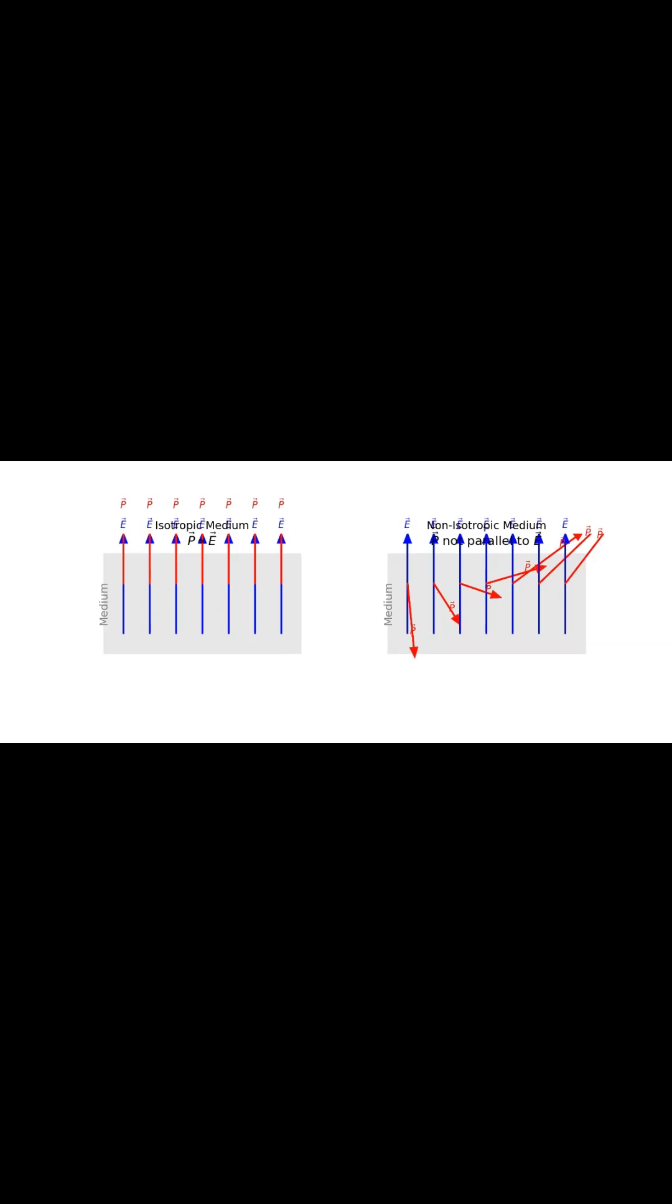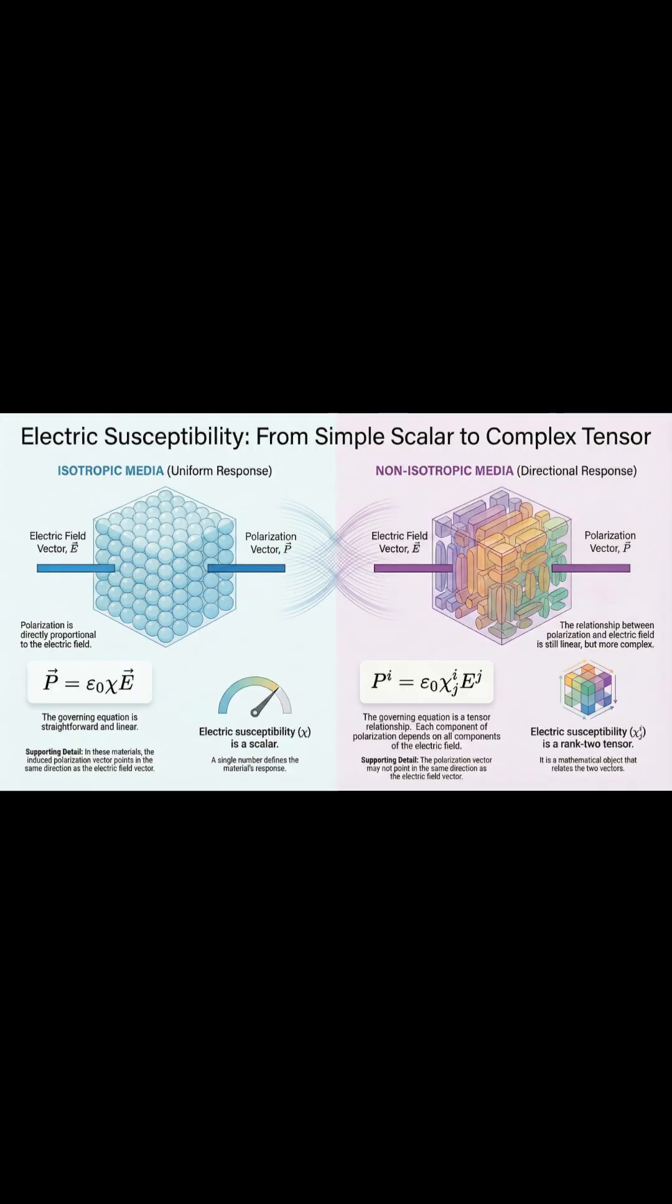Finally, for those non-isotropic directional materials, that simple number just won't cut it. Because the structure can misalign the response away from the field, we need something more powerful, a rank 2 tensor. Think of it like a complex map or a matrix that holds all the data to account for those tricky directional dependencies.